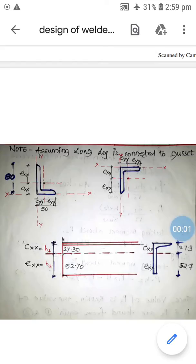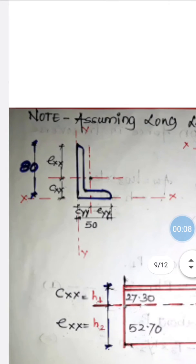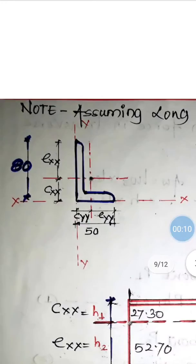Continuing from the first part, we refer to the small diagram showing the centroid properties. From the centroid towards the junction it is Cxx about the horizontal axis, and from the center towards the toe it is Exx about the horizontal axis. Considering the same about the vertical axis, it is Cyy and Eyy.